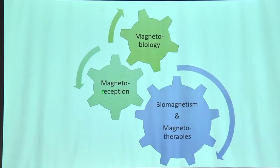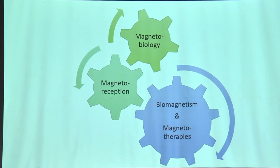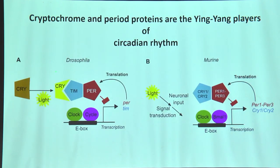So far we have talked about magnetoreception. Beyond that, there are other aspects of magnetism within biology: magnetobiology and biomagnetism, and I will also come to magnetotherapies. Magnetobiology includes magnetoreception but also tells us how this magnetoreception can perturb life. We know that cryptochromes are part of photoperiodism and are also part of circadian rhythm.